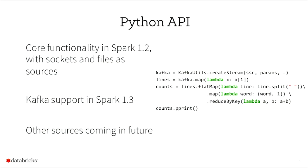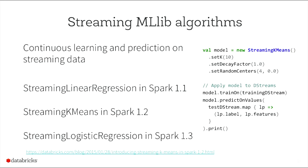What have we added in the last year? A key contribution is the Python API — you can now write your Spark Streaming code in Python using sockets, files, and Kafka support is coming. We added streaming machine learning algorithms for continuous learning and prediction. Streaming linear regression was added in 1.1, streaming K-means in 1.2, and streaming logistic regression in 1.3 — one algorithm per release roughly.